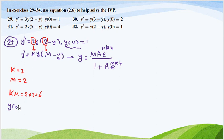Y at 0 equals 1 equals M which is 2 times A times E to the power MK which is 6 times T at 0, over 1 plus A times E to the power 6 times 0.